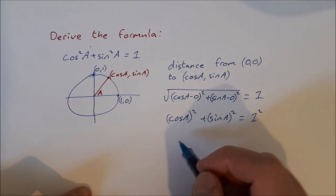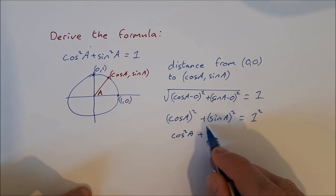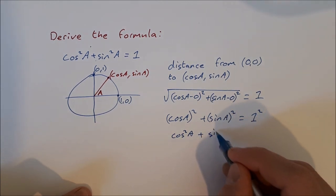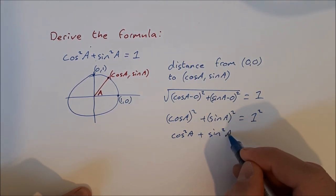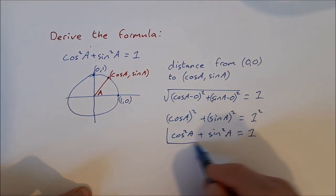(Cos a)² is cos²a. (Sin a)² is sin²a. And 1² is 1. That's what we're asked to derive: cos²a + sin²a = 1.